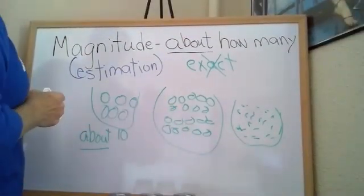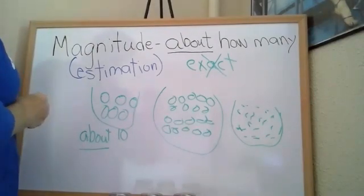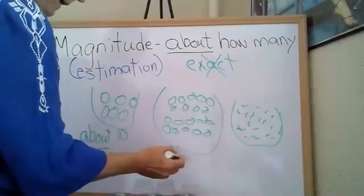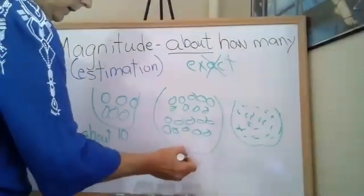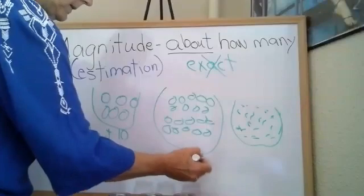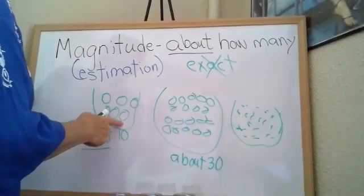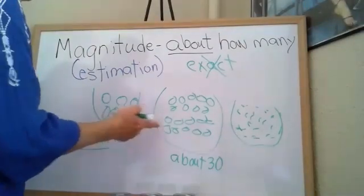The next group looks like it might have, again I'm not going to count it, it might have about 30. Why would I say 30? Well because there is more in here than there is in here, but do I know exactly how many? No.